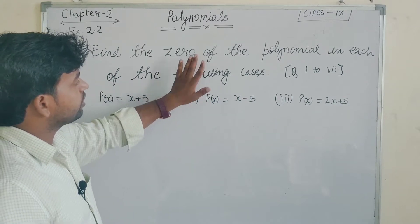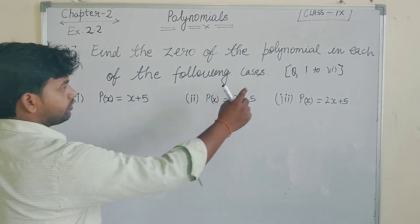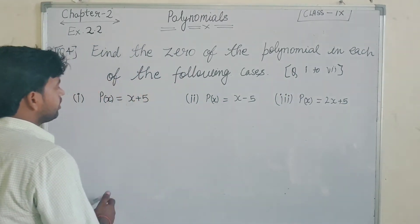What do we want to do? We want to get zeroes in all polynomials. Here is question number 1 to 7. We will solve three questions.